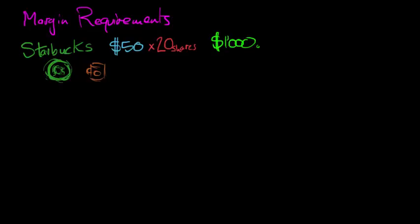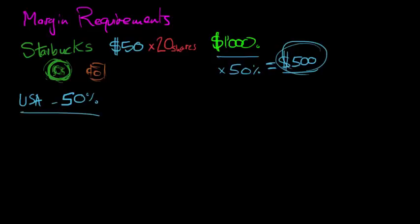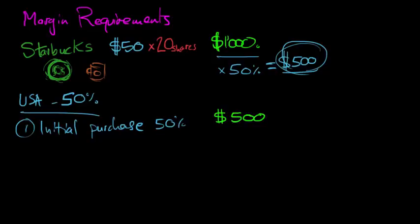So the margin requirements in the US - the original margin requirement is 50%. So the most you can borrow from your $1,000 is going to be $1,000 times 50%, and this is the original margin requirement. So your minimum account balance has to be at least $500 to cover the transaction. So the bank balance we have is $500 and the loan amount is $500.